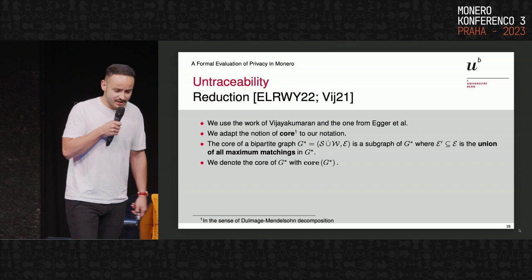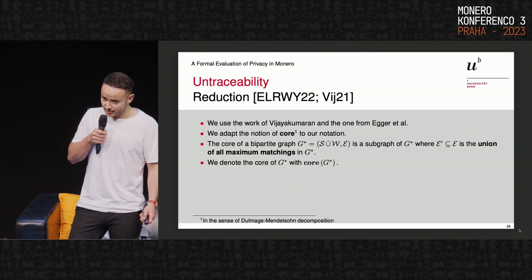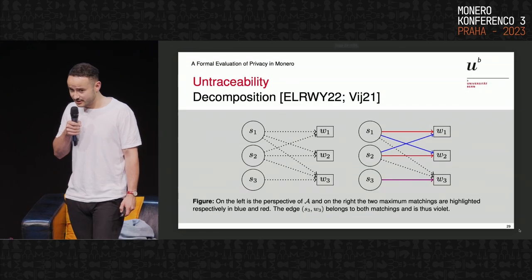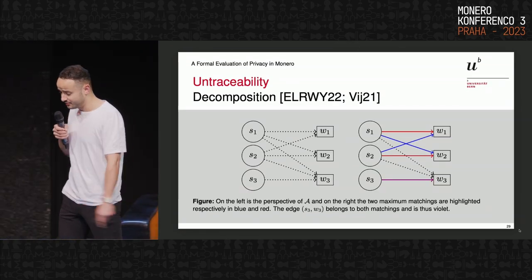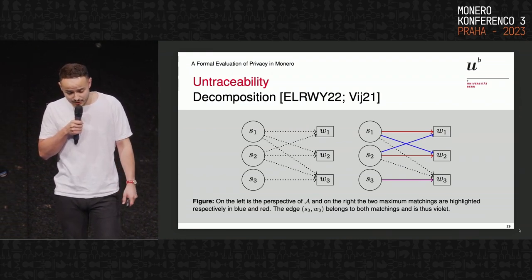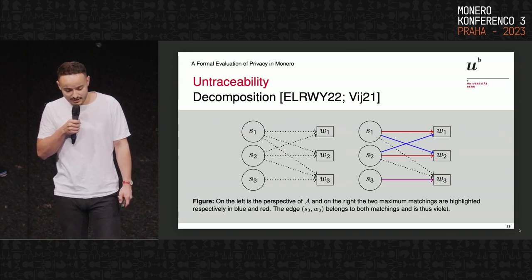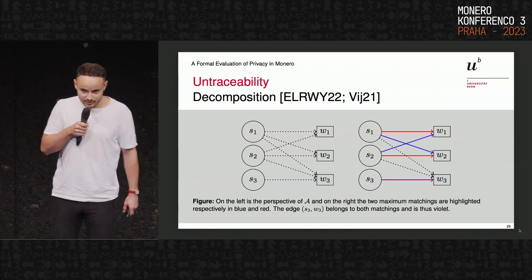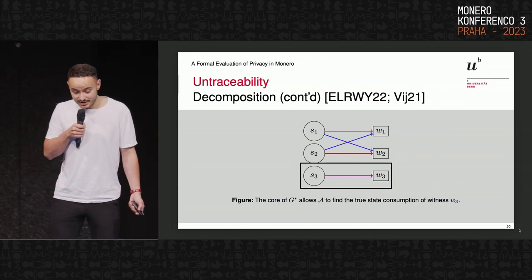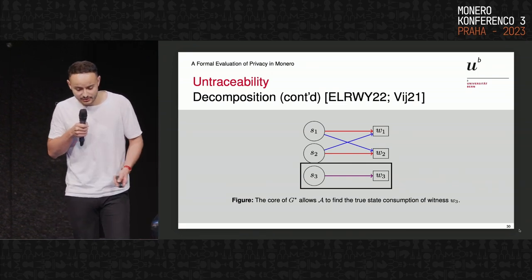In a nutshell, when the adversary computes the core, it is able to prune some edges — reducing the untraceability set. For example, with two maximum matchings shown in red and blue, and a violet edge that's part of both, we are able to prune the two dotted edges going to W3. This results in full deanonymization in this case.